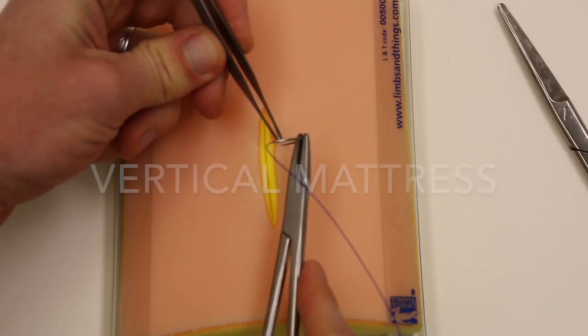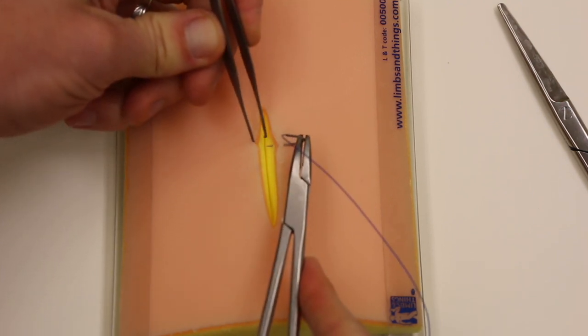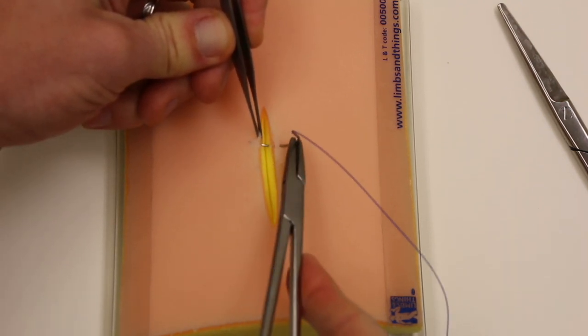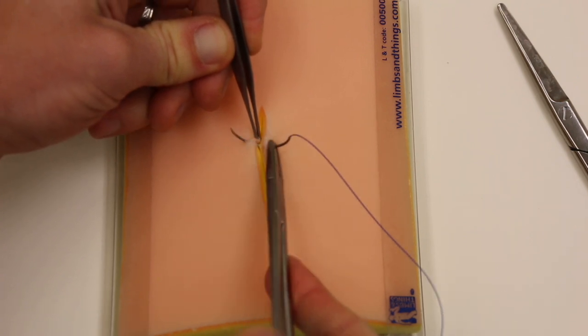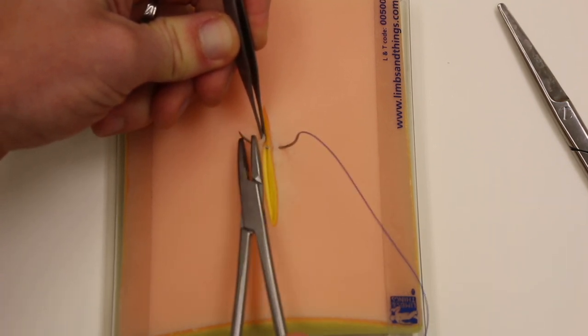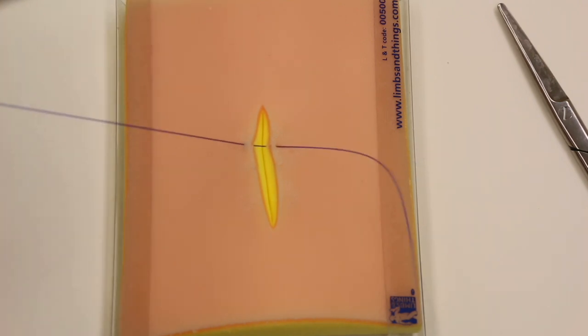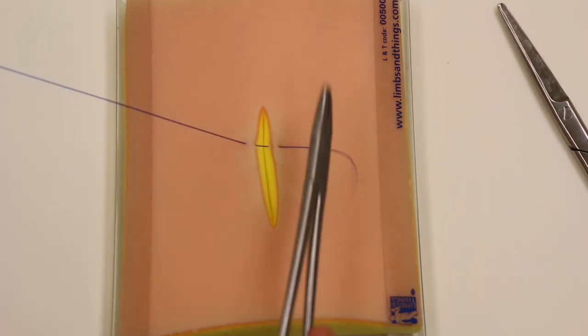Going relatively near the skin edge to relatively near the skin edge. Pulling through, leave a little bit of tail initially. About that much is pretty good.